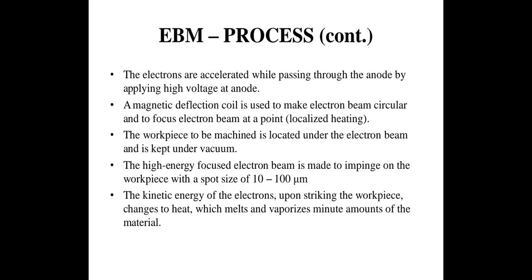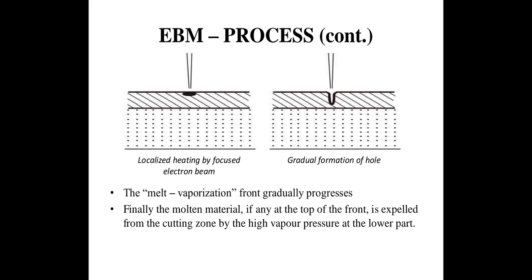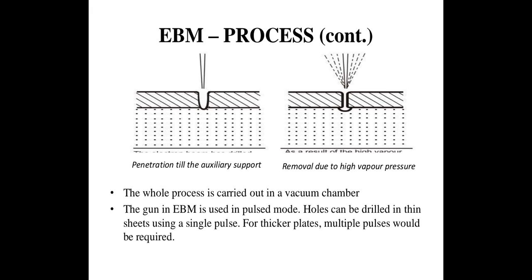The workpiece to be machined is located under the electron beam and is kept under vacuum. The high-energy focused electron beam is made to impinge on the workpiece with a spot size of 10 to 100 microns. The kinetic energy of electrons upon striking the workpiece changes to heat, which melts and vaporizes a minute amount of material. As shown in the diagrams, first there is localized heating by the focused electron beam, then formation of holes — the melting and evaporation front gradually progresses, and finally molten metal at the top of the front is expelled from the cutting zone by the high vapor pressure at the lower part.